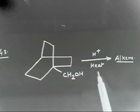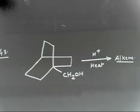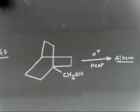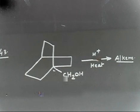What will happen in the first step? You will generate CH2+. I will give you a hint: first make a carbocation, then rearrange the carbocation, and then lose H+. Then you will get an alkene.